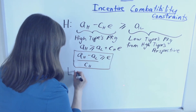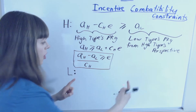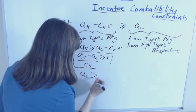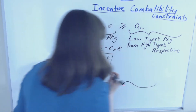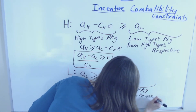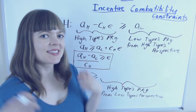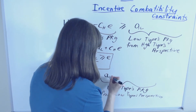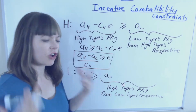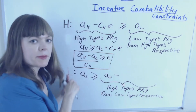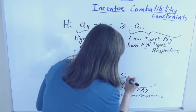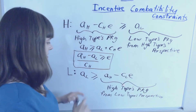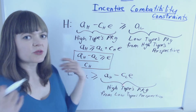Now we do the same thing from the low type's perspective. On one side of the inequality we have the low type's package — just the low type's wage with no educational requirement. On the other side is the high type's package from the low type's perspective — what would happen if the low type tried to take the high type's package. In that case, the low type would get the high type salary AH, but would have to incur the educational cost CL times E, where CL is a much higher effort cost per year of education than CH. We then use algebra to solve for E.